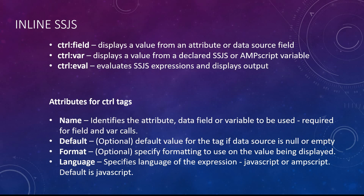There are also four attributes for these control tags. The name attribute identifies the subscriber attribute, data field, or variable, and is required when using control:field or control:var. Language is optional and defaults to JavaScript, so you can omit it for SSJS; for Ampscript you must specify it. Default lets you specify a fallback value — for example, if a data field is null or empty, a default value will be shown. Format lets you specify particular formatting for the output value.